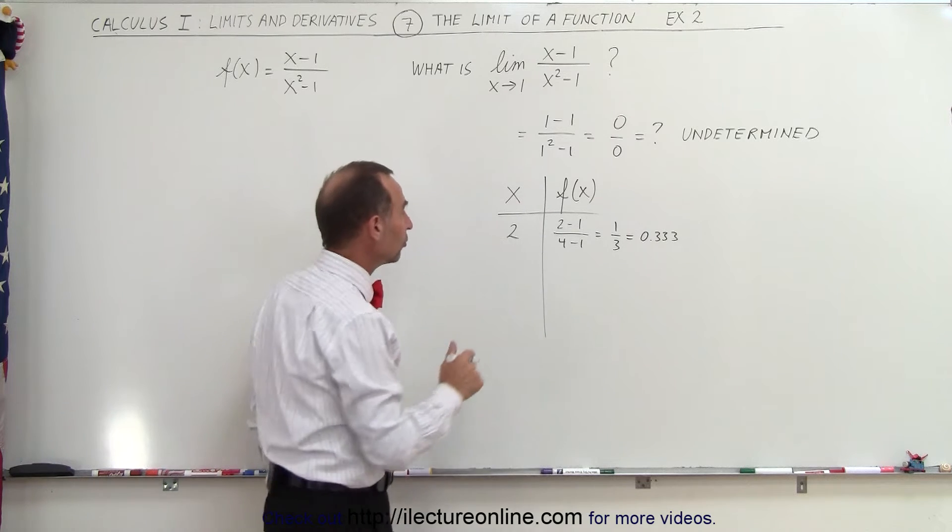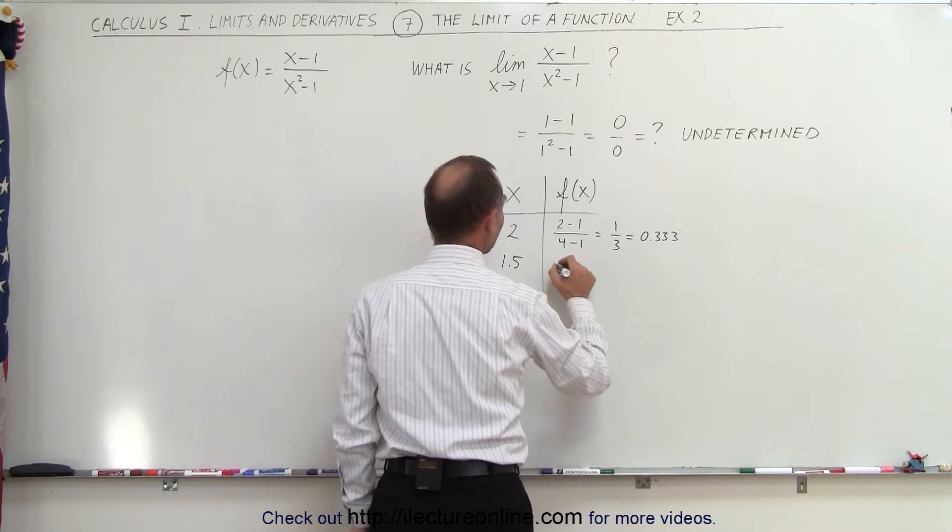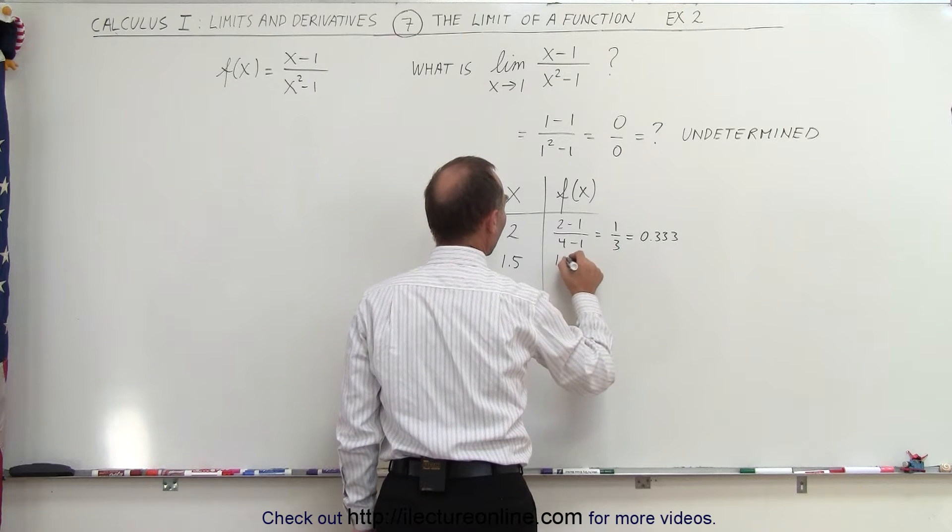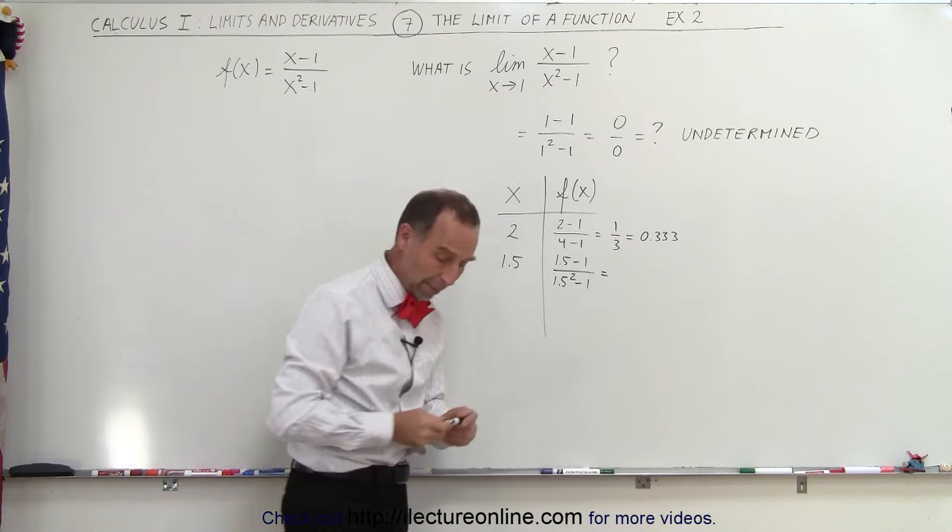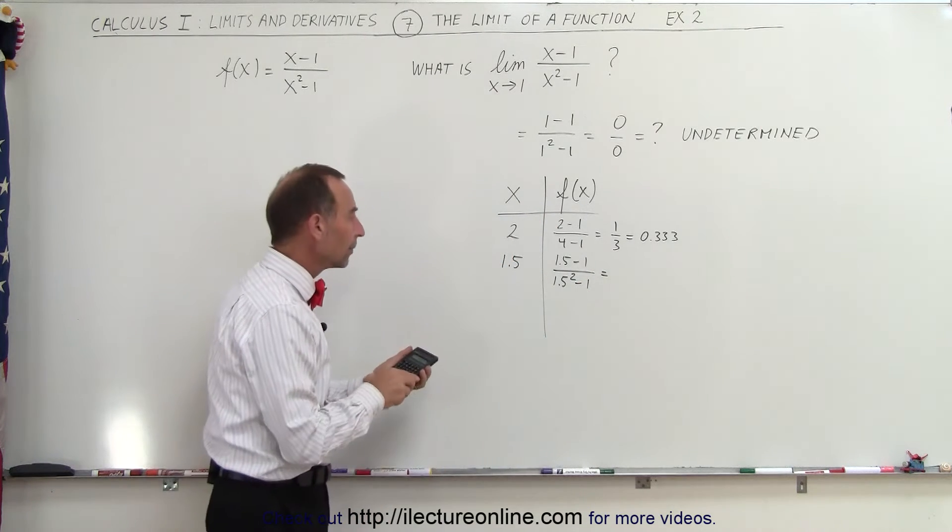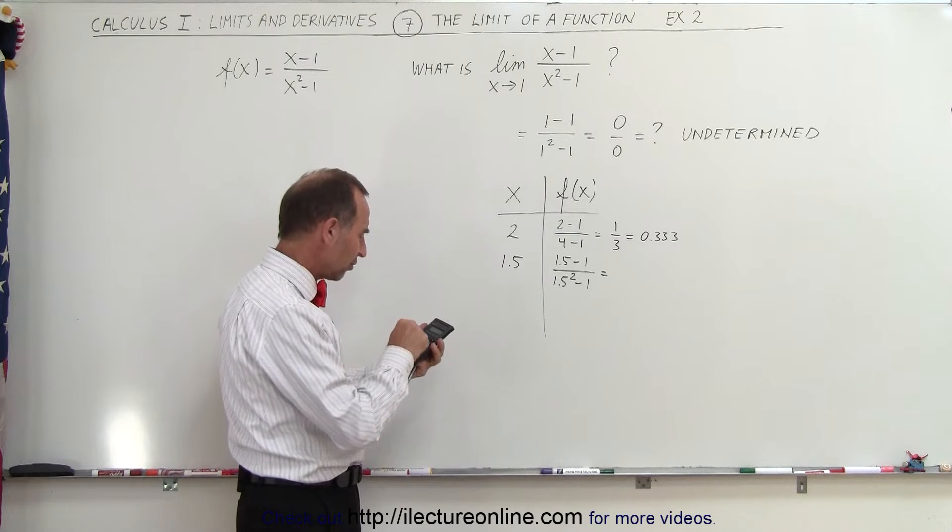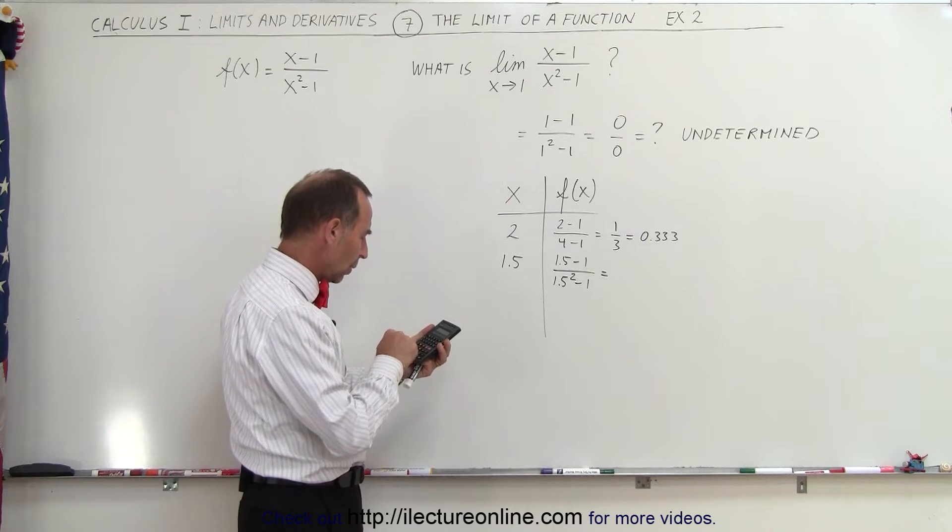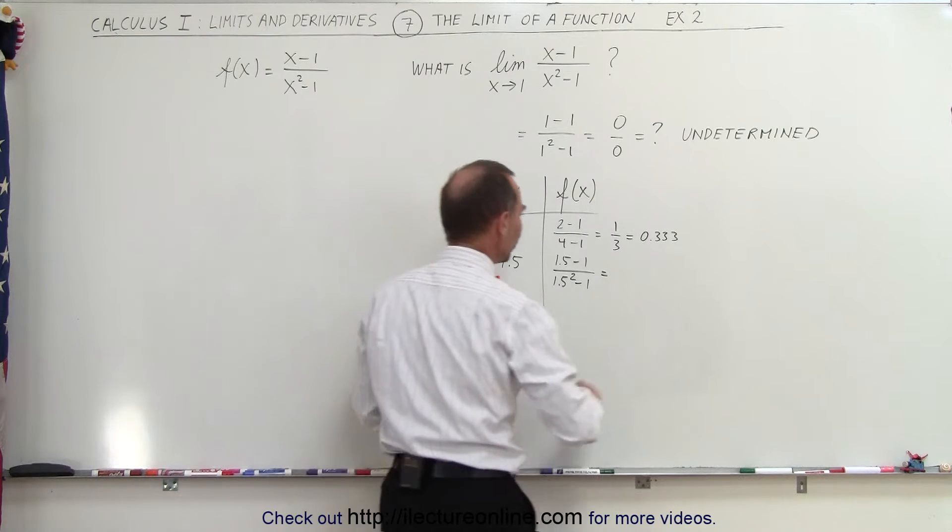All right, now let's get it a little bit closer to 1. Let x equals 1.5. So with x equals 1.5, we have f of x is 1.5 minus 1 divided by 1.5 squared minus 1. For that, I will grab a calculator, see what we get. So we get 0.5 divided by 1.5 squared minus 1 equals, and so we get 0.4.